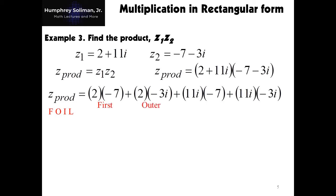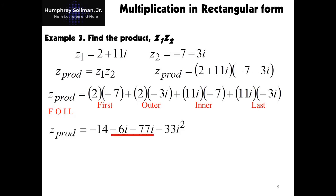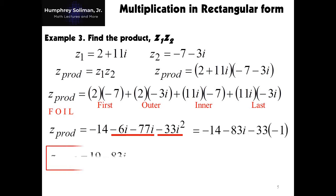We multiply the first terms first, followed by the outer terms, then the inner terms, and finally the last terms of our binomials. After that, we can simplify further by combining the two terms with i: negative 6i and negative 77i. Also, we can replace i squared beside negative 33 with negative 1. This will give us z prod equal to 19 minus 83i.